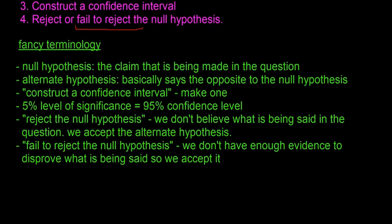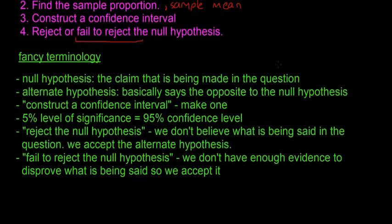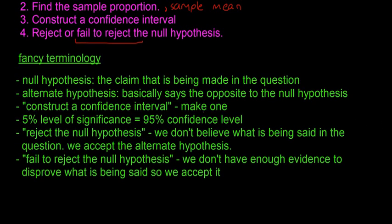When it says construct a confidence interval, that's what I have for step three. That just means like make one or like write the confidence interval. Construct is kind of the word they use but it's fancier than it needs to be. If you see the 5% level of significance, just think 95% confidence level. It's just a different way of saying the same thing.